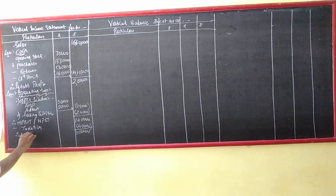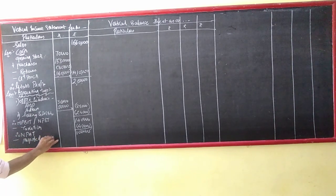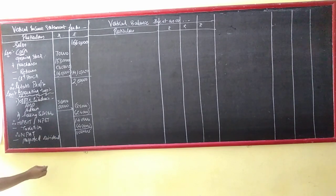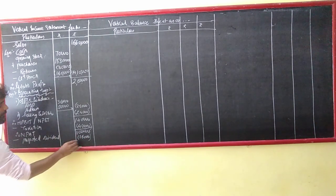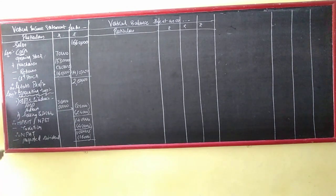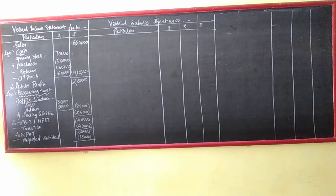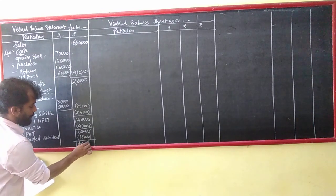Therefore NBBE. Less proposed dividend - how much? 16,000. That means the finance remaining after proposed dividend leaves 84,000 balance.